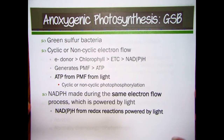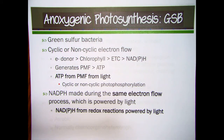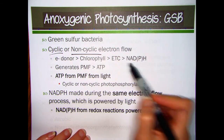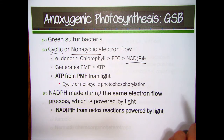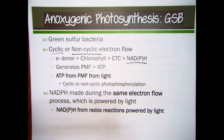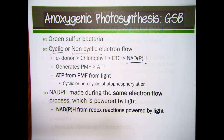In the green sulfur bacteria, there is a branched electron transport chain where the electron's destiny depends on the availability of NADP+ or NAD+. The electrons can either flow non-cyclically to NADP+ if available, or cyclically if not. In either case, the electron transport chain generates a PMF ultimately powered by light. The NADPH produced is made directly through a light-powered electron transport chain and is not made through a PMF-powered reverse electron transport — that is the big difference from purple non-sulfur bacteria.